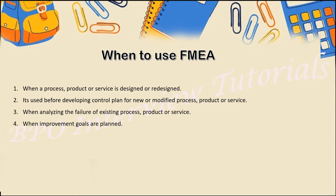FMEA is used when a process or product is being designed or redesigned. It is also used before developing a control plan for a new or modified process, product, or service. For example, if you are working in a calling process and getting repeated escalations, you prepare a control plan to control it. In that process you may find chances of defects or errors — the call may be getting disconnected due to a technical issue or an Avaya issue — so errors can exist in the process, equipment, and many more areas.